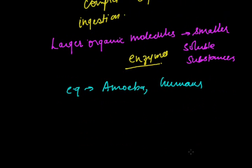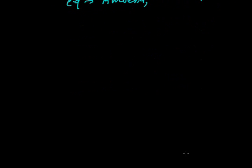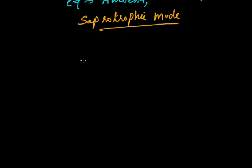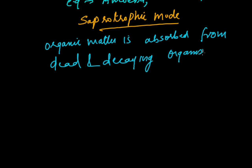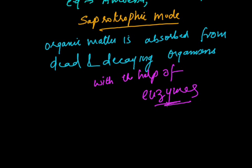The next type is saprotrophic mode of nutrition. In this, organisms absorb organic matter from dead and decaying organisms, also with the help of enzymes. This type of nutrition is found most commonly in bacteria and fungi.